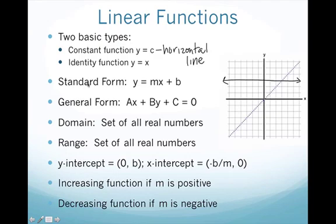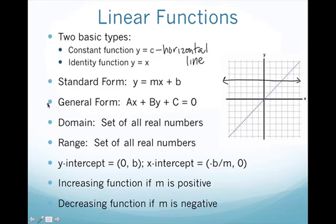We also have an identity function. That is the line y equals x, and that's this dotted line right here. Now linear functions can take on many different forms. We have the standard form, also known as the slope intercept form, y equals mx plus b. You have your general form, ax plus by plus c. We've seen other ways to find equations of the line as well. As you're taking notes, there's going to be a lot of information to write down. Make sure you know the standard form and general form for your linear functions.